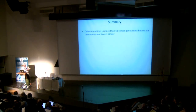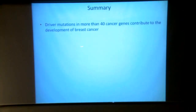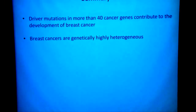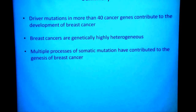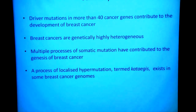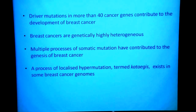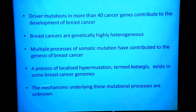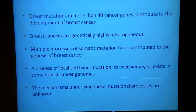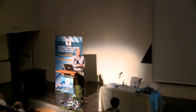To summarise: driver mutations in more than 40 cancer genes contribute to the development of breast cancer, so it's a genetically hugely heterogeneous disease. And there are multiple processes of somatic mutation which have contributed to the genesis of this cancer type. There is a process of very localised hypermutation — kataegis — which is active in about half of breast cancer genomes. What you'll have noticed is that I haven't speculated at all about the mechanisms underlying any of these findings, because we know hardly anything about them. With that, I'll close and thank our collaborators and the people in the group who've done all the work — this is the Sanger Institute. Thank you for your attention.